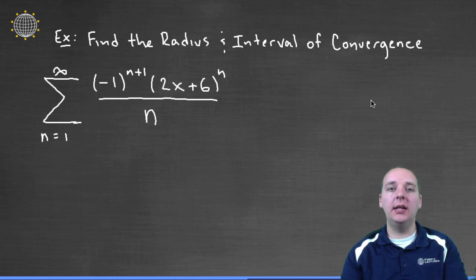In this example we're being asked to find the radius and the interval of convergence of this power series, negative 1 to the n plus 1 times 2x plus 6 to the n all over n.